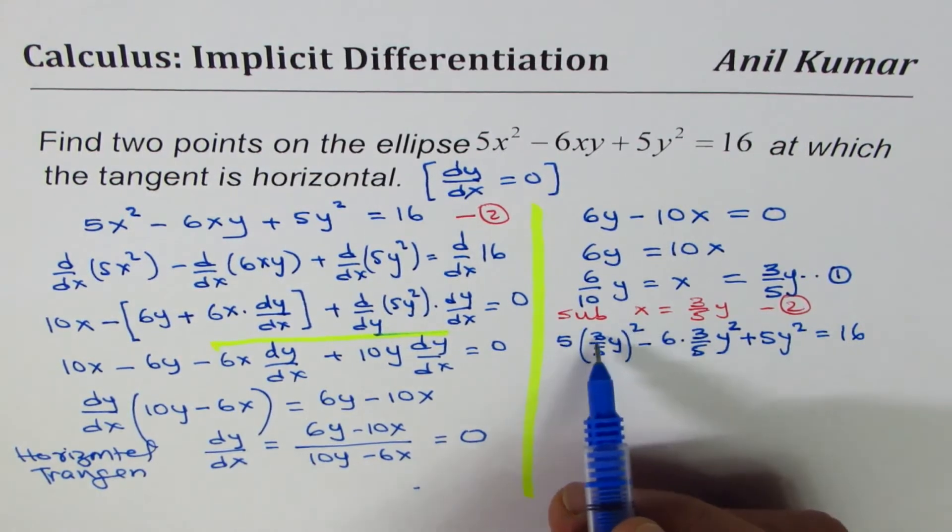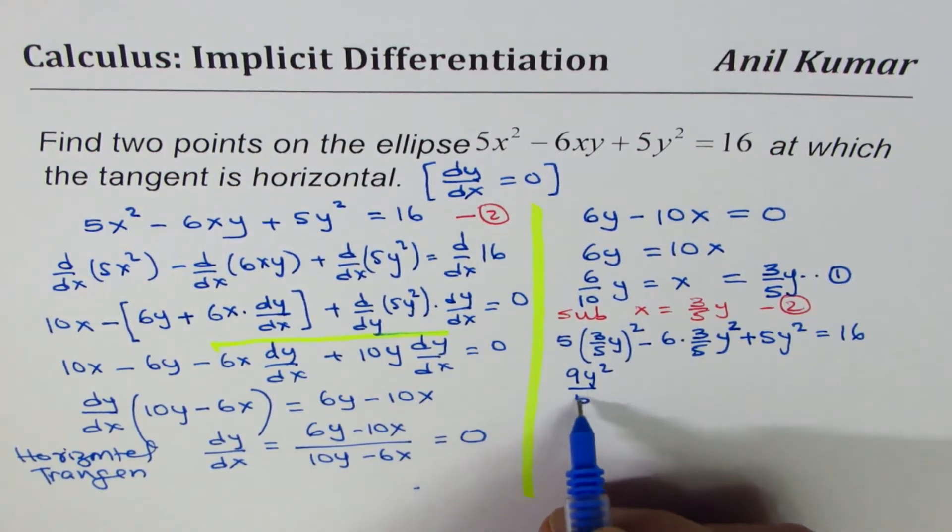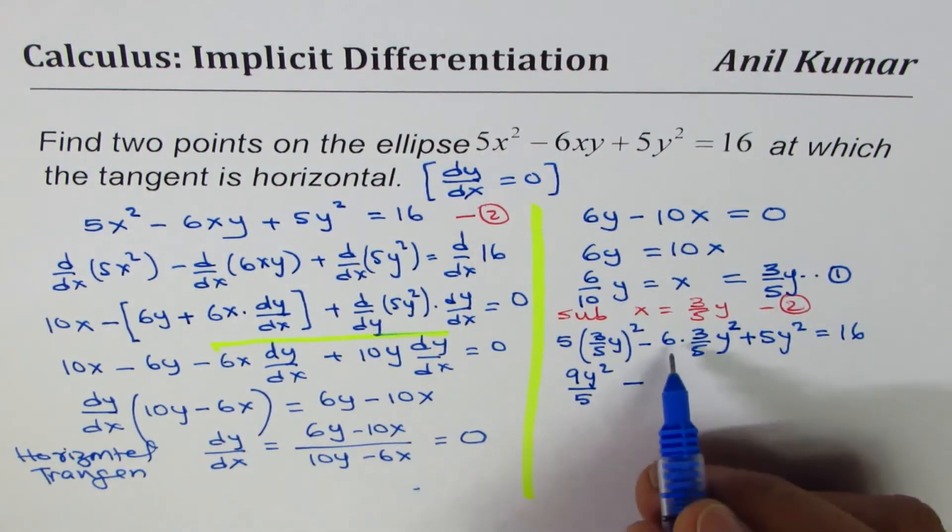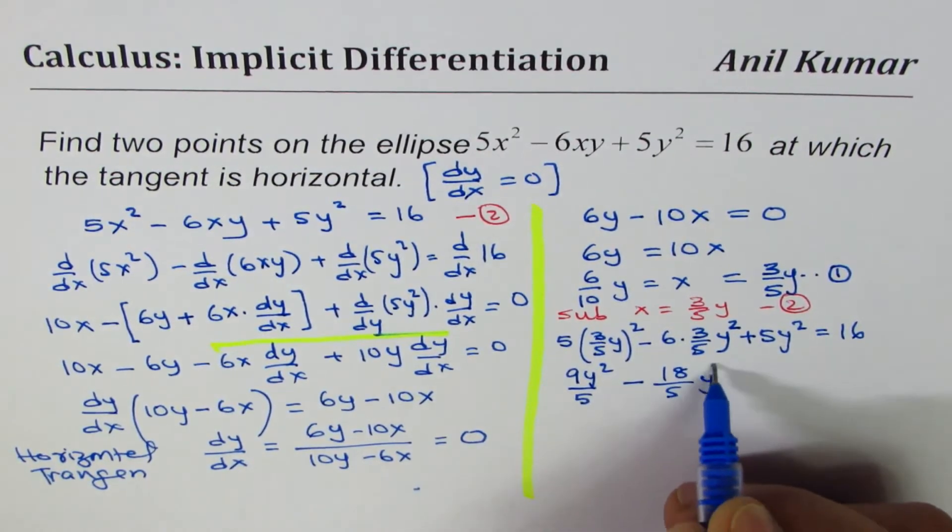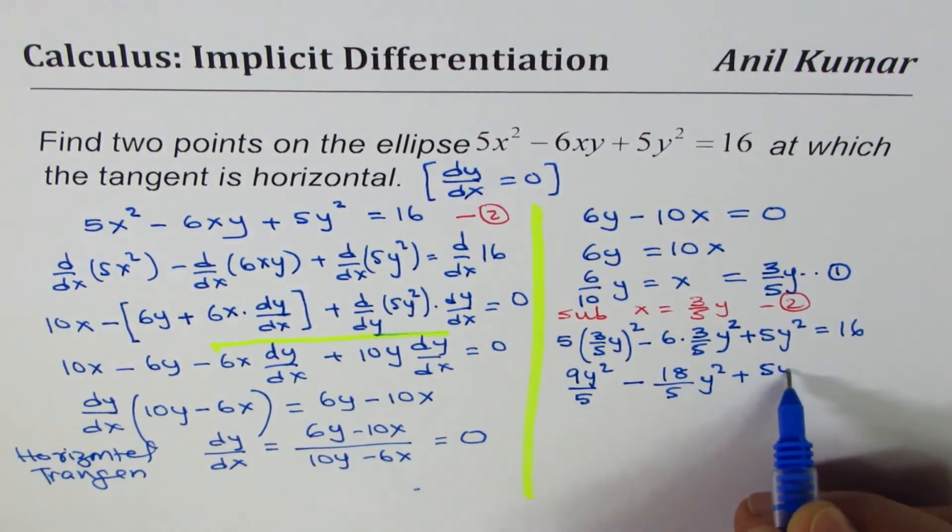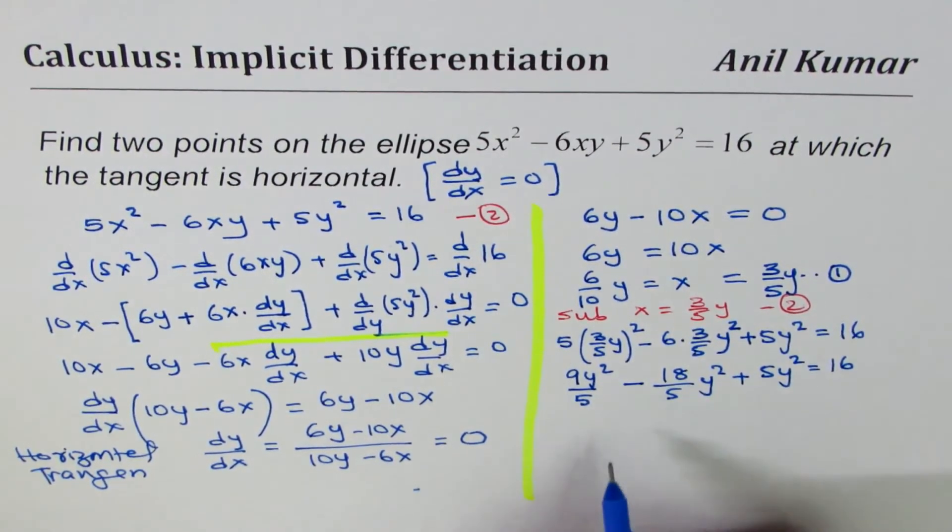So let us simplify this. 3 square is 9, y², 25, and this is 5, so we are left with 5 here, minus 18 over 5, y², plus 5y², equals to 16.